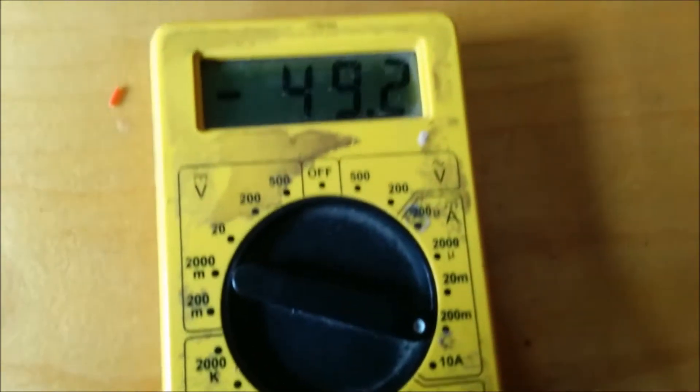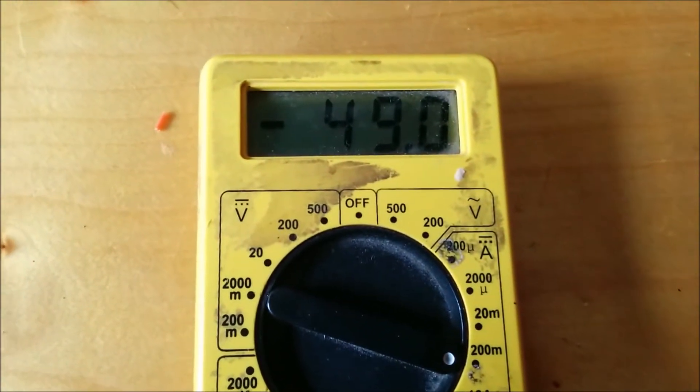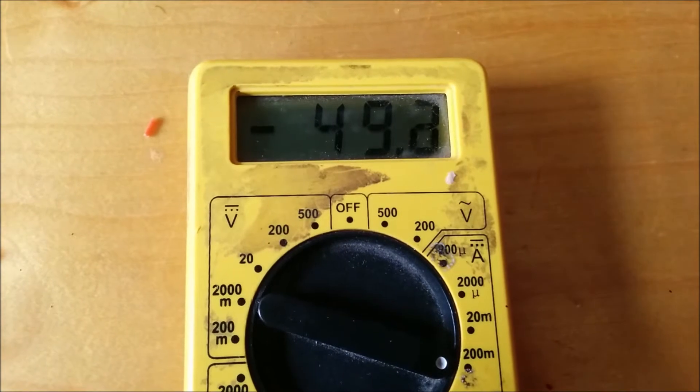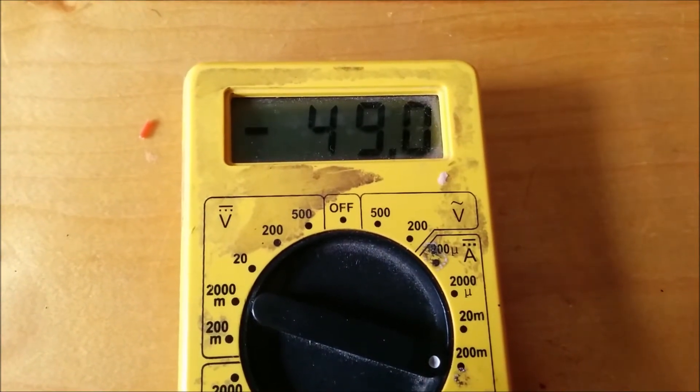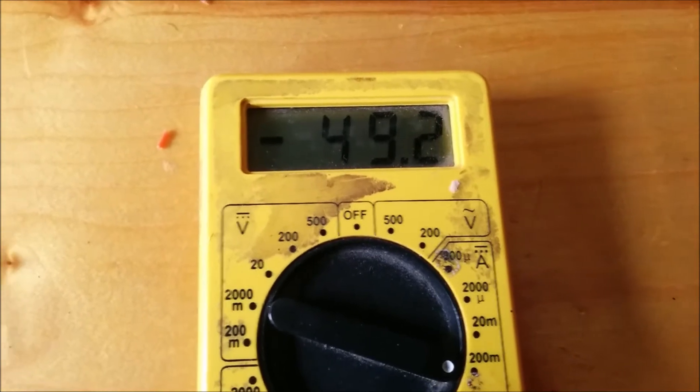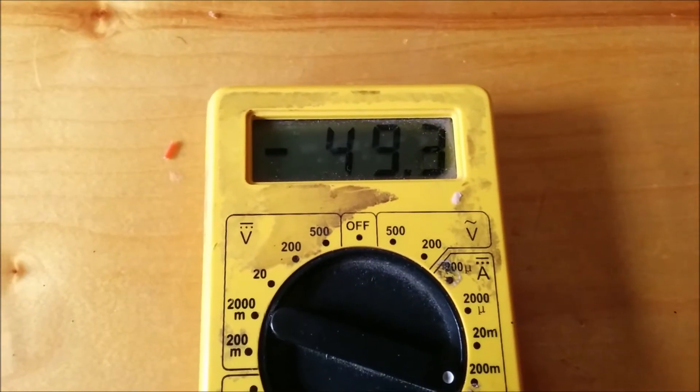I'm drawing 49 milliamps right now. The current draw strangely is climbing slowly. It started out at about 47.9 and then it went to 48, now it's at 49 trying to go to 50.